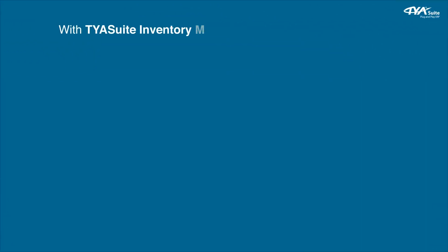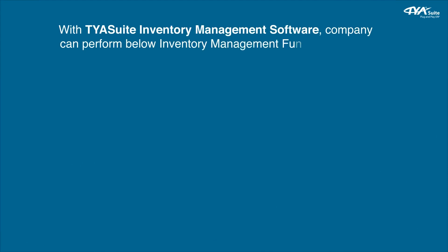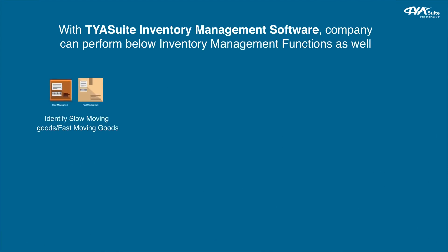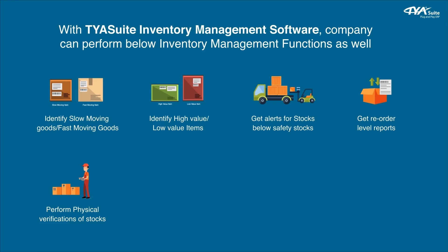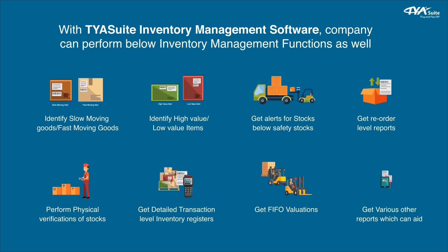With TYASuit inventory management software, companies can also perform the following functions: identify slow moving and fast moving goods, identify high value and low value items, get alerts for stocks below safety stock levels, get reorder level reports, perform physical verifications of stocks, get detailed transaction-level inventory registers, get FIFO valuations, and get various other reports to aid decision making.